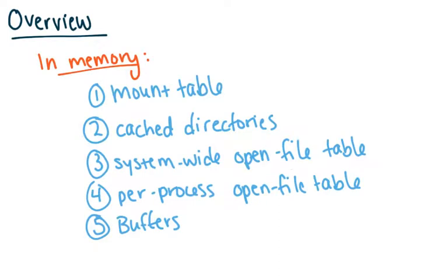In memory, you're going to have your mount table. That's going to give you an idea of which volumes are mounted — it has to be in memory if it's being used. The second thing is any cached directory. In the course of looking through directories, you might want to cache some commonly used directories so you don't have to go back into storage every time you need to search. Also in memory is the system-wide open file table, which tells you all the files open in the system at a given time. Each process also has its own per-process open file table, and then buffers for reading and data.